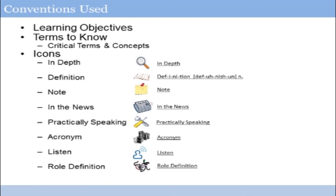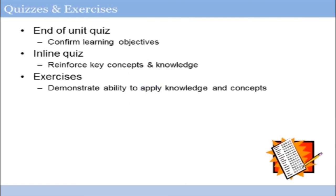Throughout this course, in the courseware, we make fairly extensive use of different structures and iconography to help you put a lot of these ideas in context. Each of the main chapters identifies a series of learning objectives, key terms that you need to be deeply familiar with when it comes time for the examination, as well as icons that call out various definitions, notes, examples of how these are practically used in the real world, and so on. At the end of each chapter, we'll provide you a set of checkpoint quizzes that you can use to test your knowledge and skills and identify any key areas that you want to review.